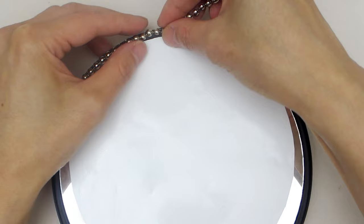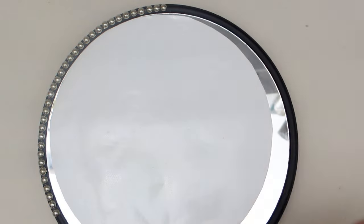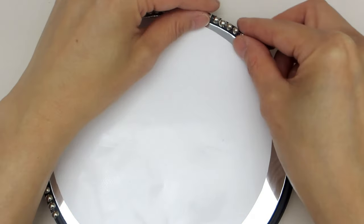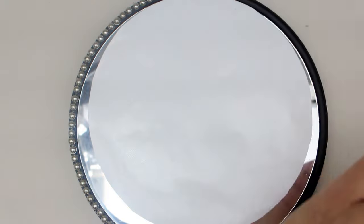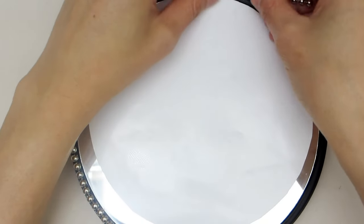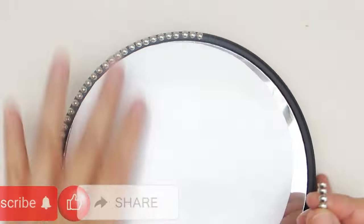Here I have a round black frame mirror from the Dollar Tree and I'm embellishing it with some silver bead stickers also from the Dollar Tree. The silver bead stickers have a self-adhesive backing and they're very flexible so you can mimic the round shape of the mirror when you adhere them onto the frame. And while we work on that...